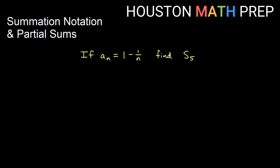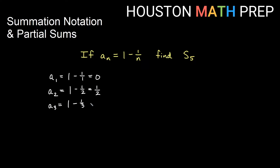If we have the formula a sub n equals 1 minus 1 over n, and we want to find S5 — the sum of the first five terms — we need to figure out those five terms and add them together. So a1 is 1 minus 1 over 1, which is 0. The second term is 1 minus 1 over 2, which is one-half. The third term is 1 minus 1 over 3, which is two-thirds. The fourth term is 1 minus 1 over 4, which is three-fourths. The fifth term is 1 minus 1 over 5, which is four-fifths.